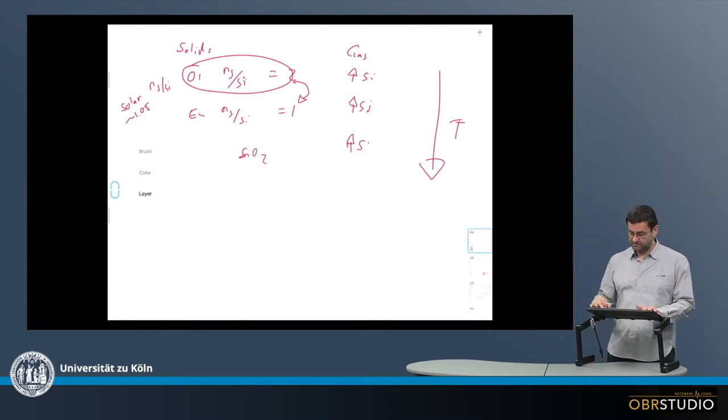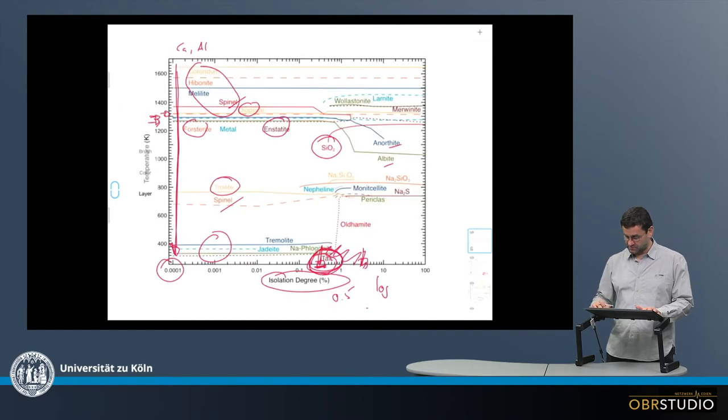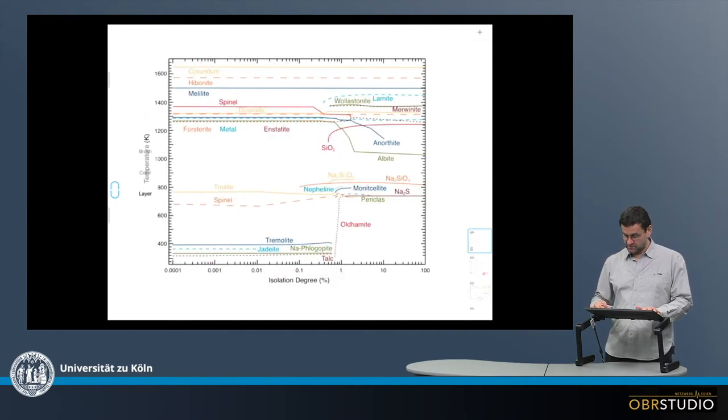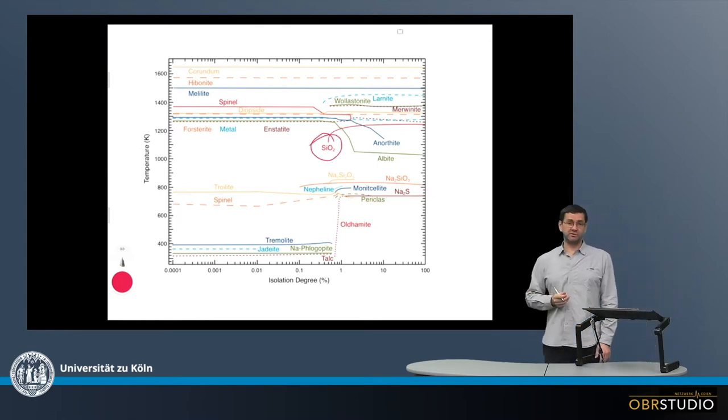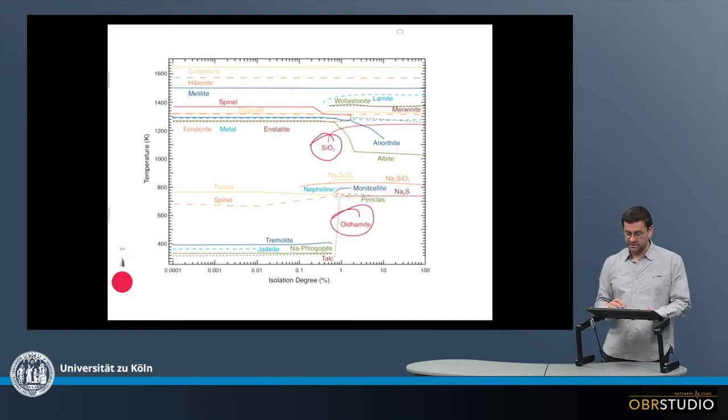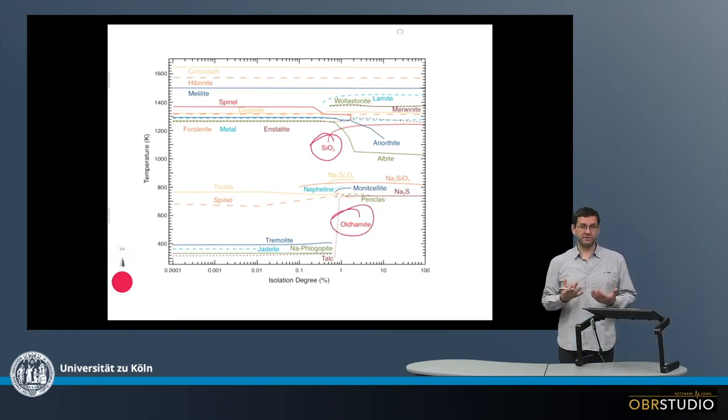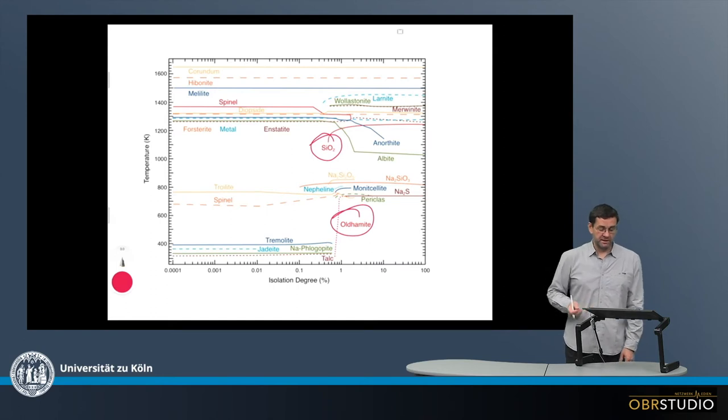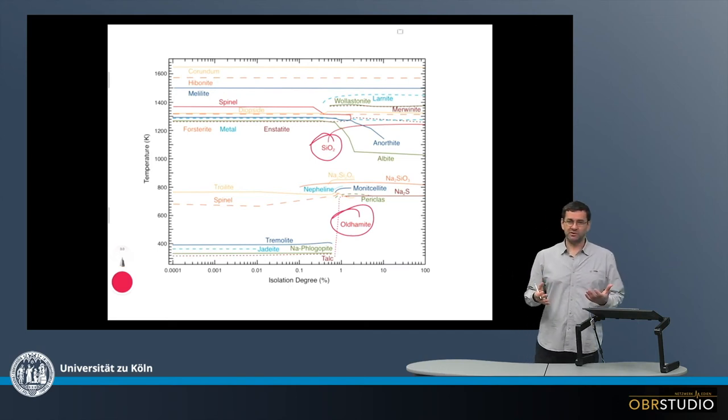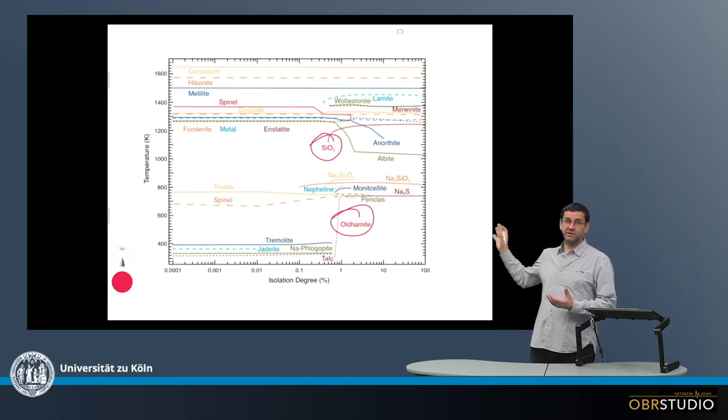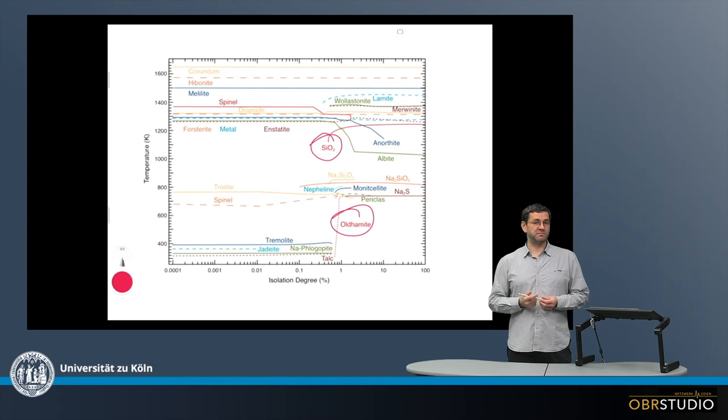And this is basically the simple mechanism behind the occurrence of SiO2 here. And other minerals, such as oldhamite, start to appear, which is found in enstatite chondrites, for example. But the important bit that we learn from this is that, first of all, condensation very likely happened in the early solar system, and the process of condensation was fractional condensation, and here we can even quantify how much isolation must have happened in the early solar system.